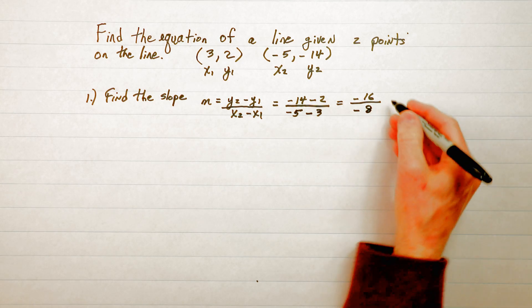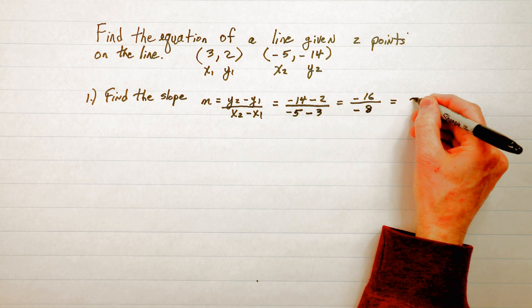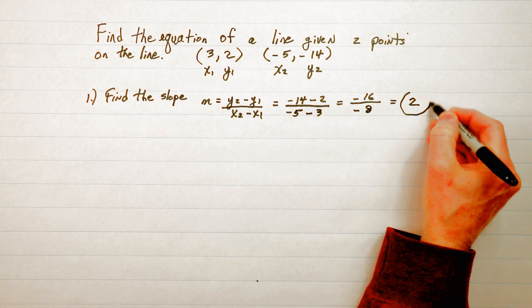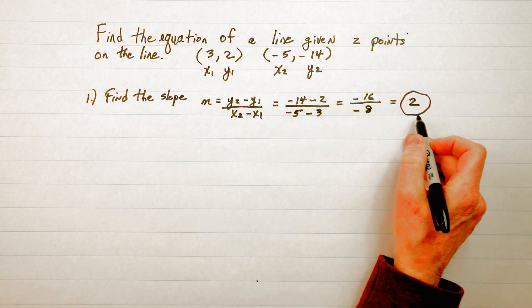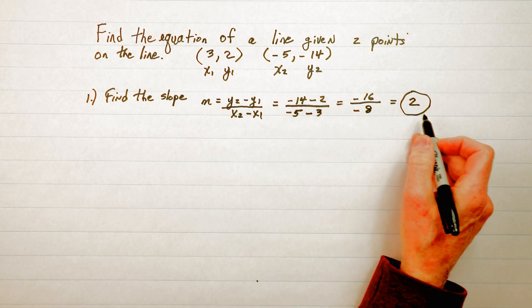And when we divide these two numbers we get positive 2 as our slope and I'm going to circle positive 2.